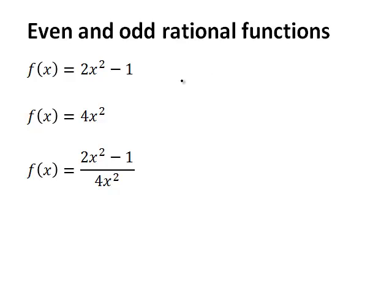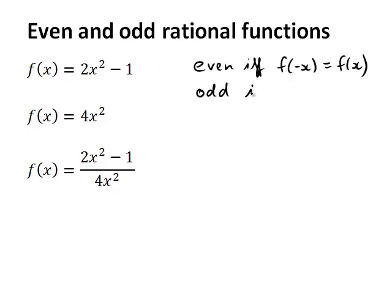Now let's have a look at what it means for a function to be even or odd. A function is even if, and only if, f of negative x is equal to f of x. So if I substitute negative x in for x and I can simplify and what I get is f of x, the function is even. It is odd if, and only if, I sub negative x into f and what I get is negative f of x.